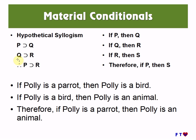Here I'm showing an example of a longer version of hypothetical syllogism which has three conditionals instead. We can infer 'if P then S' because we have a third conditional 'if R then S.' We could string this along further with more conditionals, and the consequent would be the consequent of the last conditional in the string, as long as the antecedent of each new conditional was the consequent of the previous one.